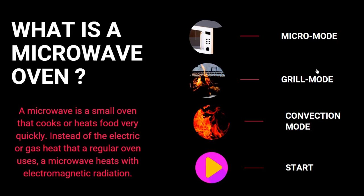The grill mode is used to cook meat and bread. It works the same as the micro mode but the purpose is to cook meat and bread. The user can set the time as per the cooking time of the meat. In the convection mode, the user can set the oven to preheat to a particular temperature, and it takes around three minutes to preheat the oven. After preheating is done, the user can set the timer as per their requirements, which goes to the start mode.